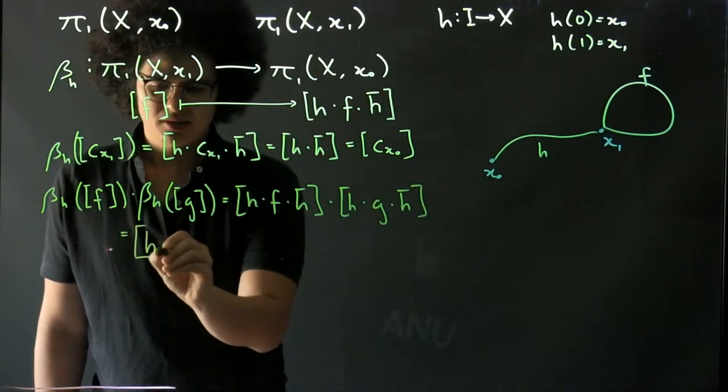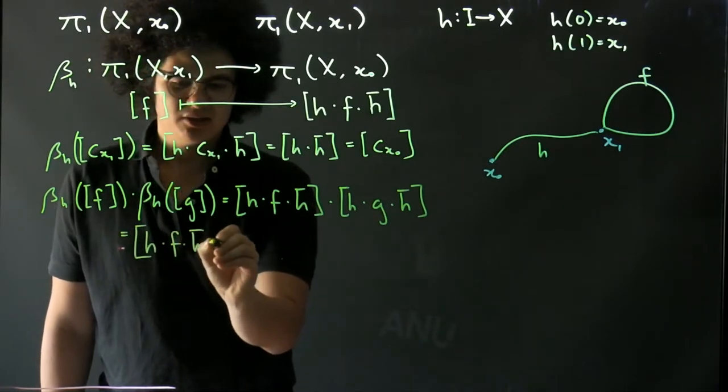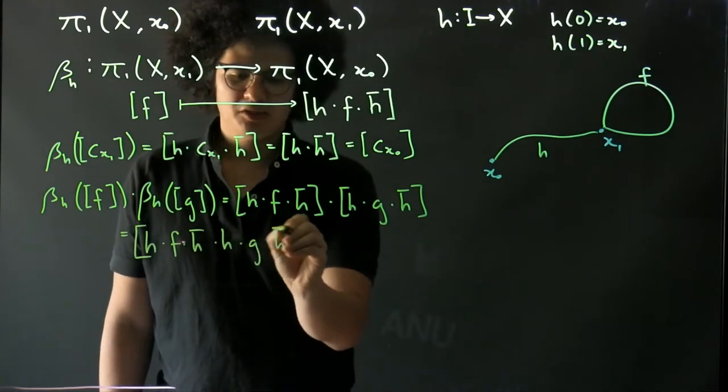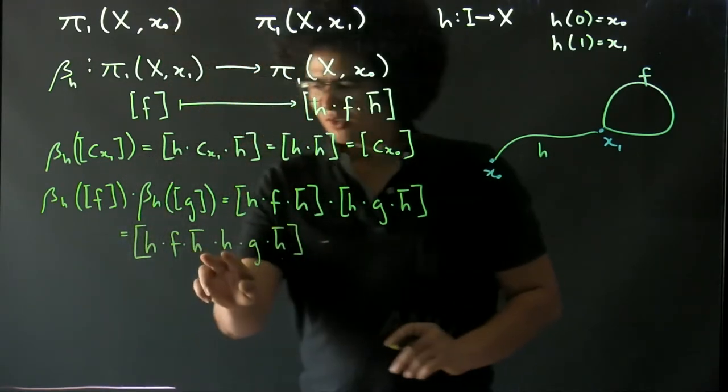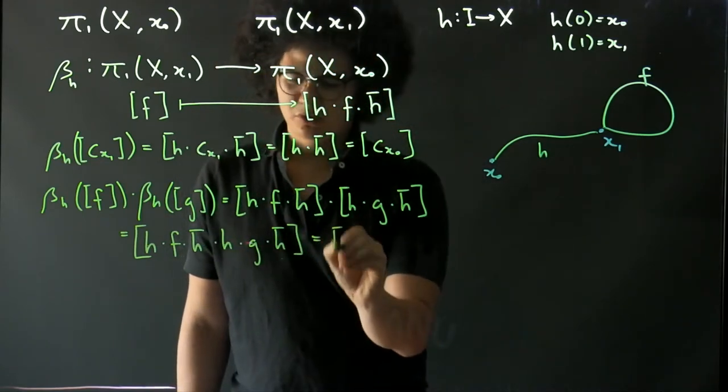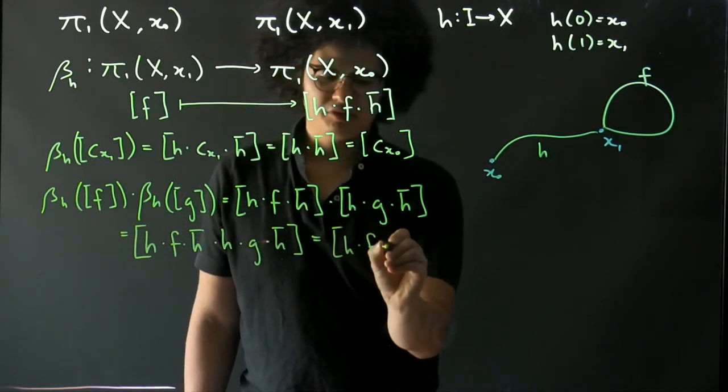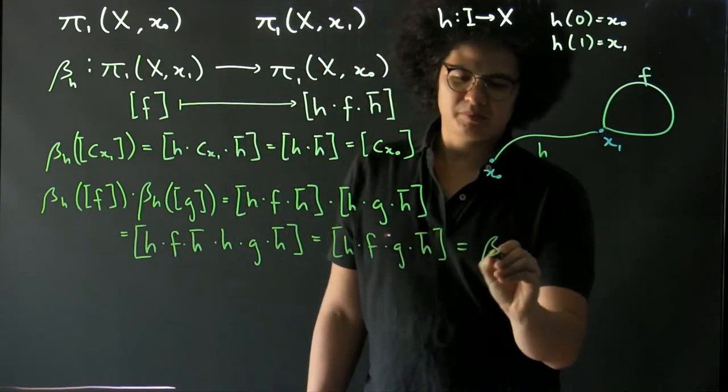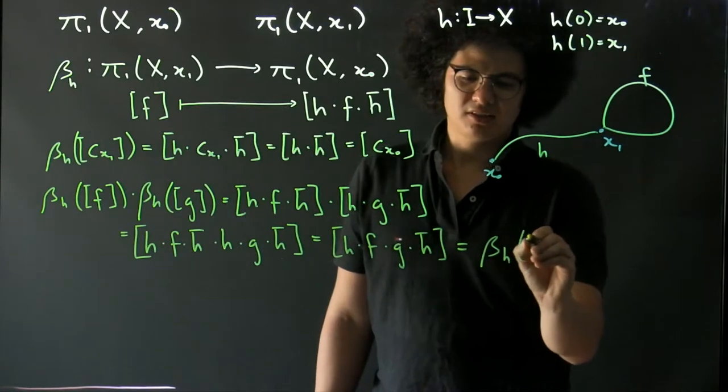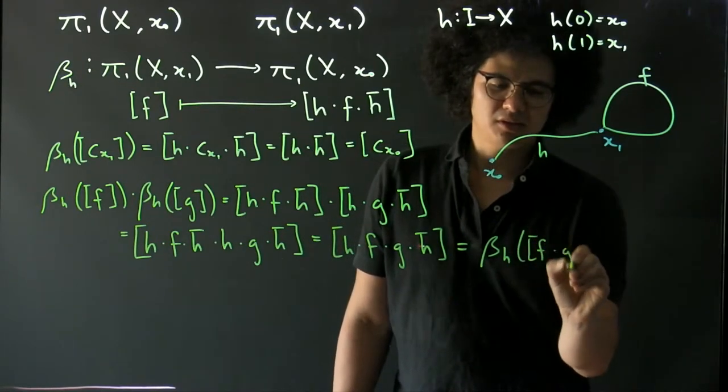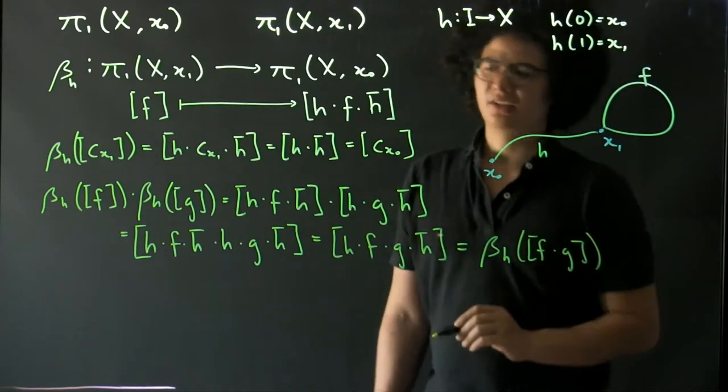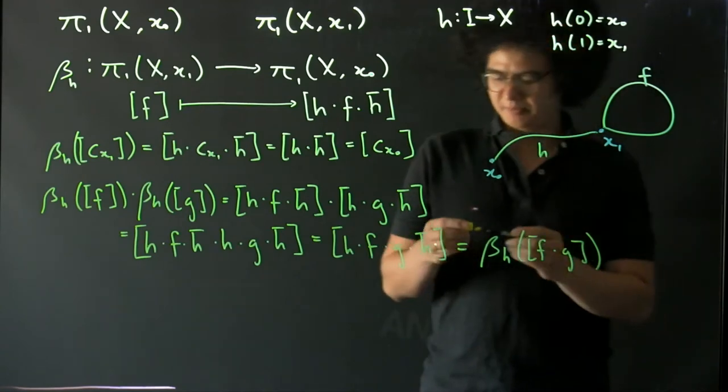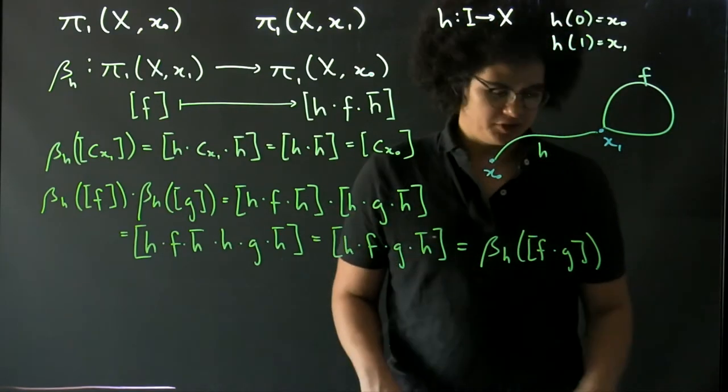What's this? This is h f h bar times h g h bar, which is h composed of f composed of h bar composed of h composed of g composed of h bar. But these two we can cancel, so we get h composed of f composed of g composed of h bar, but that's just β_h applied to f times g. Hence we've shown that this change of base point map is in fact a homomorphism.